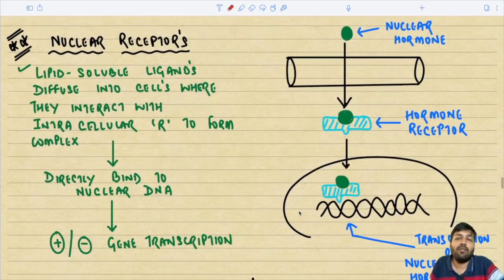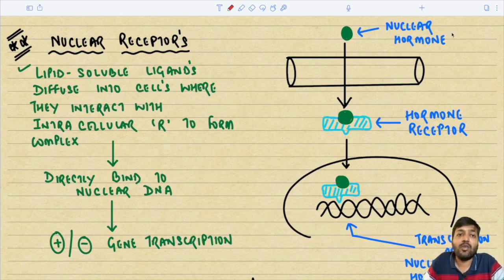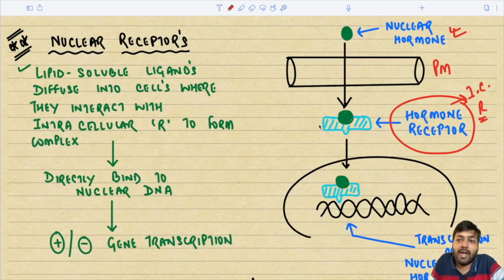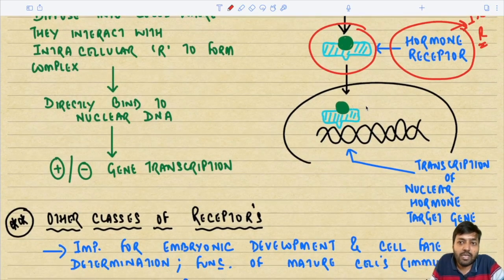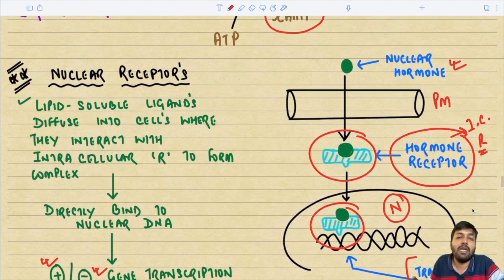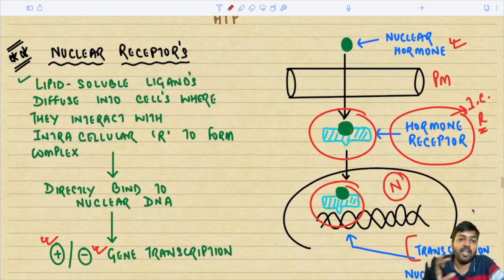The third important pathway is the nuclear receptor-mediated pathway. A lipid-soluble ligand - such as a steroid hormone or vitamin D - traverses the plasma membrane and in the cytoplasm meets with hormone receptors (intracellular receptors). Once the hormone-receptor complex is formed, it translocates into the nucleus, binds to the nuclear DNA, and may stimulate or inhibit gene transcription, facilitating transcription of nuclear hormone target genes.